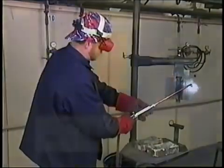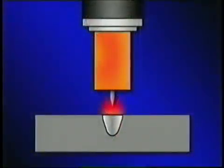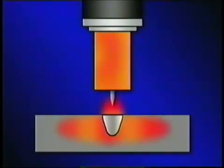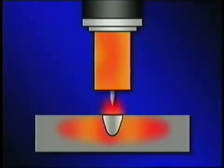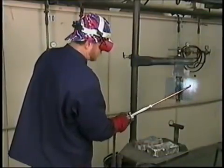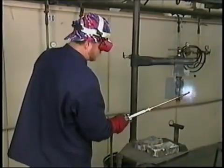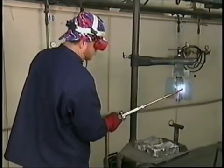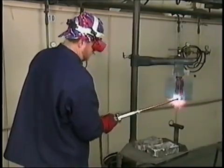Preheat is one way to control cooling. Without preheat, the cold metal surrounding the weld area acts like a heat sink, conducting heat away from the weld as it freezes. This causes the weld to cool too quickly and may lead to the formation of martensite, which in turn can cause cracking in the weld and in the heat-affected zone. But when you preheat the base metal, the heat of welding has no place to go, so it stays in the weld, allowing it to cool more slowly, which reduces the chances of forming martensite.